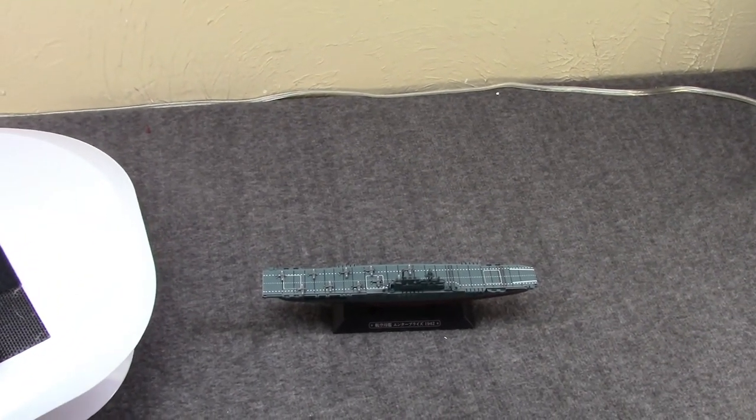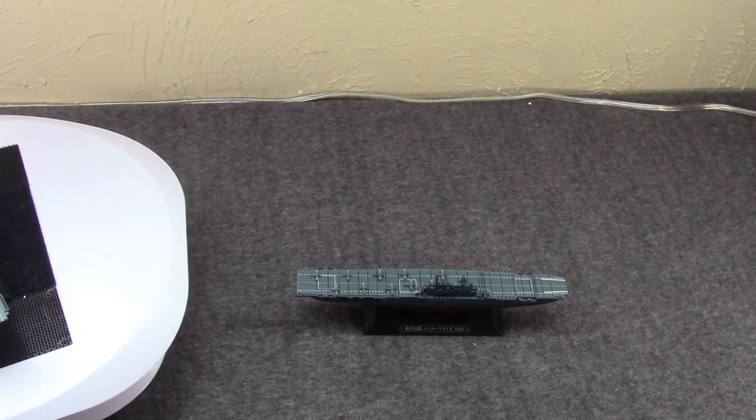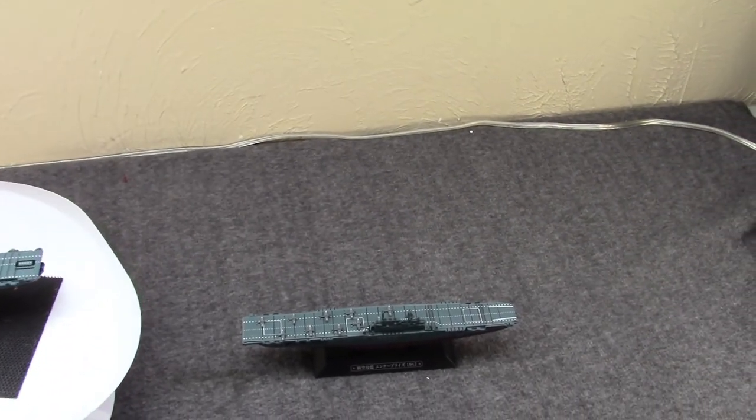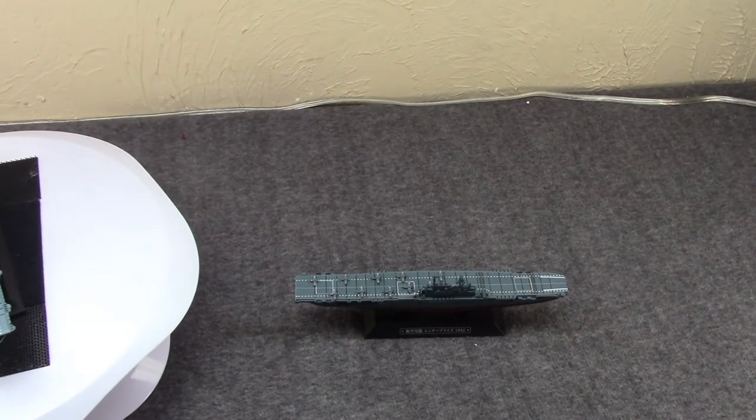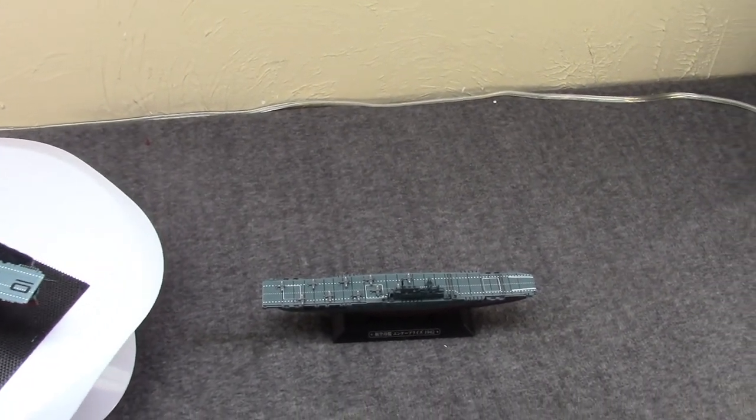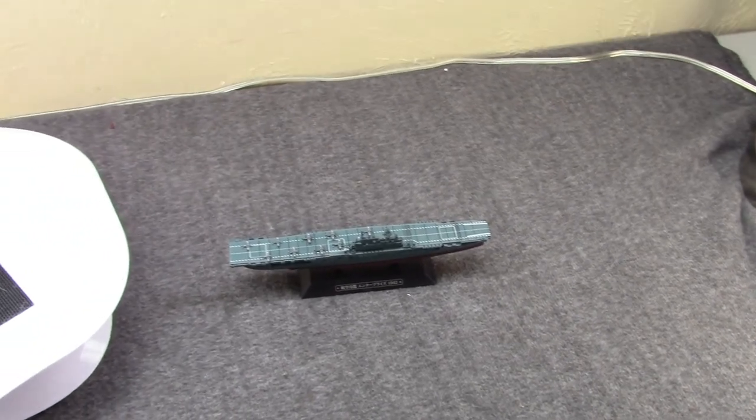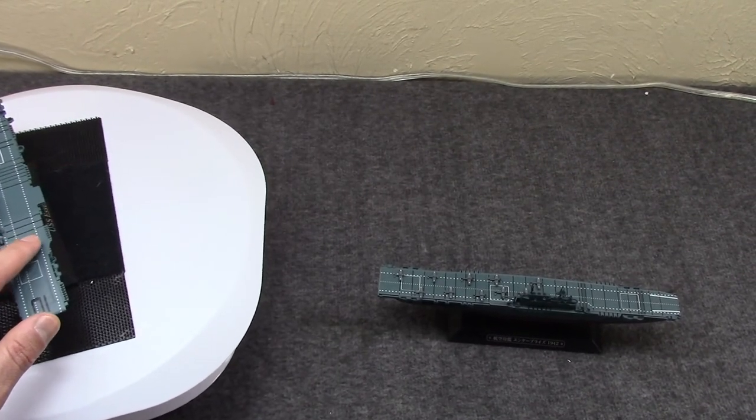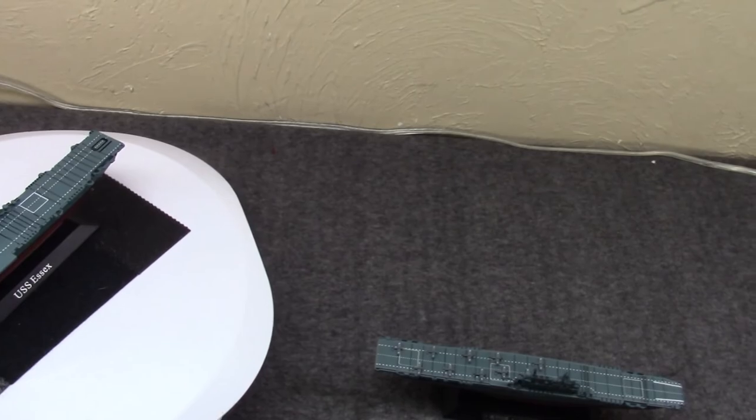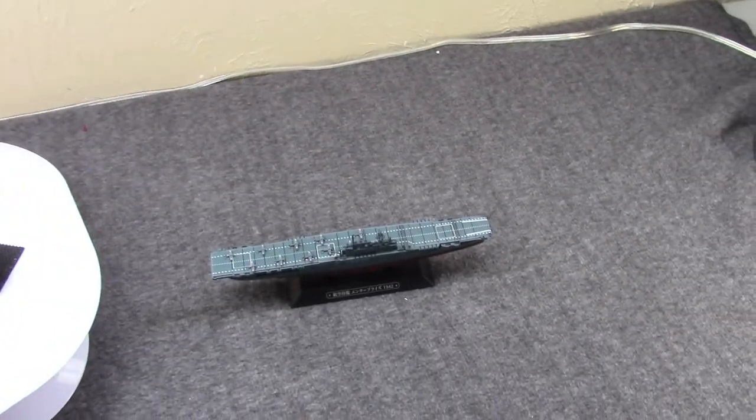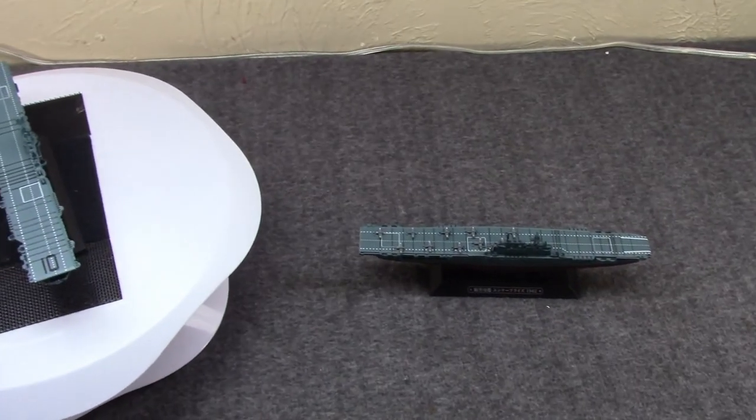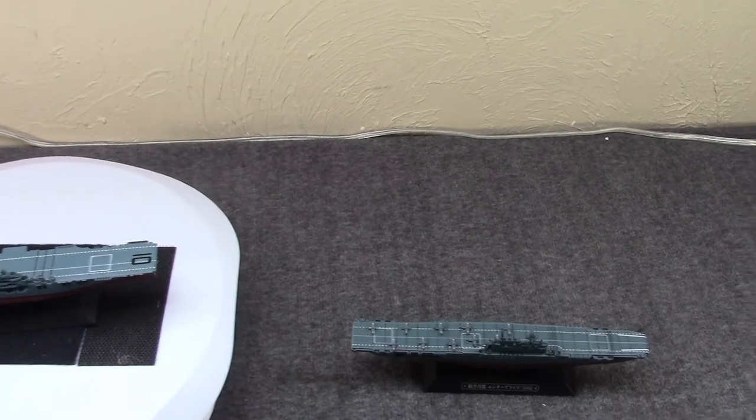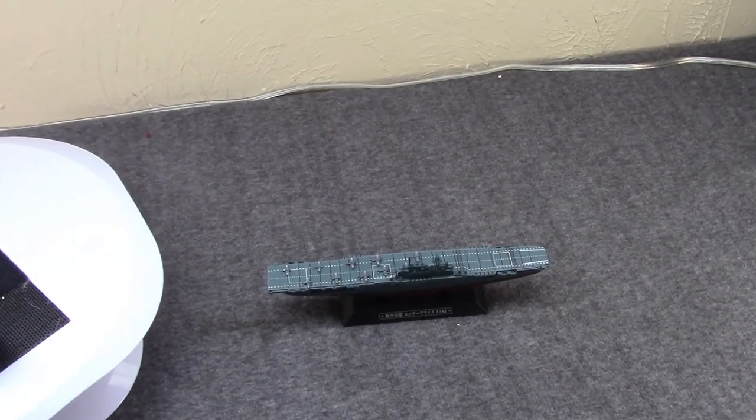They could carry a lot of aircraft, they could deploy them quickly, they could defend themselves against aircraft. And if they were damaged, they could take a hit and keep on going, as evidenced by USS Franklin and USS Bunker Hill. But there's a lot to be said about the Essex class, so it'll be a big full video when I get to it probably.